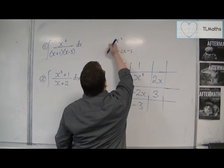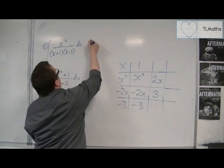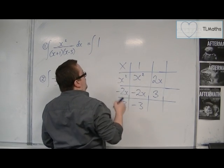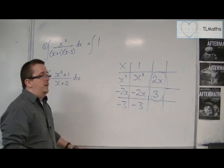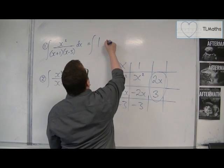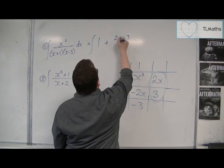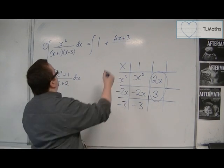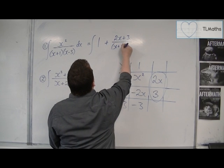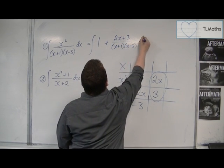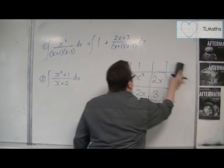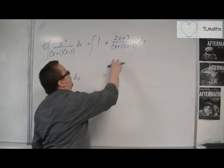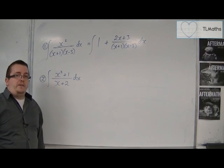We can then write this as the integral of 1 plus, this is your remainder, 2x+3 over the x squared minus 2x minus 3, so the (x+1)(x-3). And from there, you can then use partial fractions to expand this.